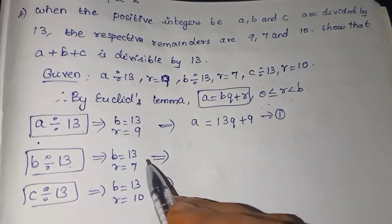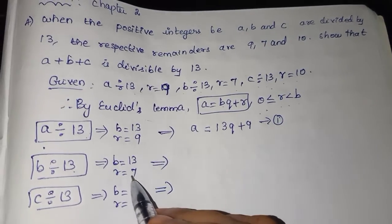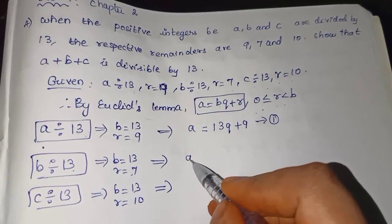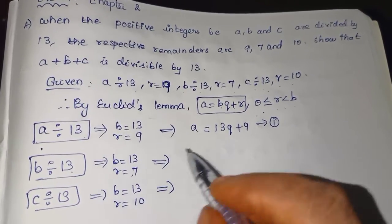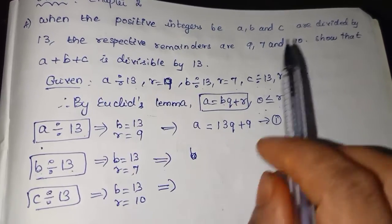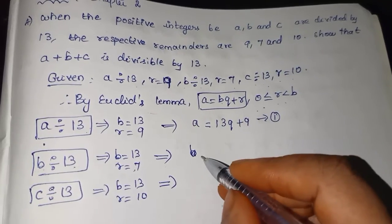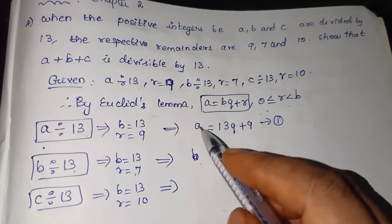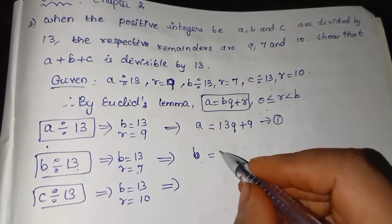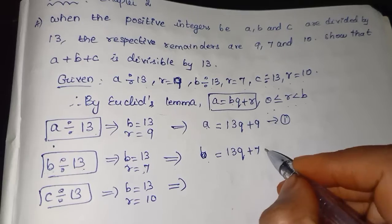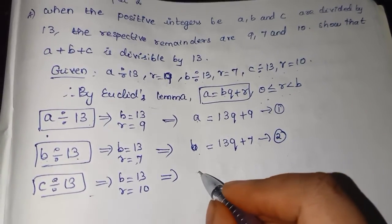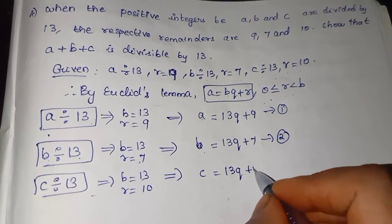Next, when B is divided by 13 — here B is the integer being divided, and 13 is the divisor, with remainder 7. So B is equal to 13Q plus 7. This is equation 2. Then, C is divided by 13, so C is equal to 13Q plus 10. So we now have three equations.